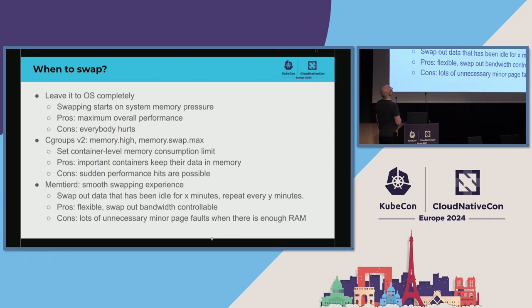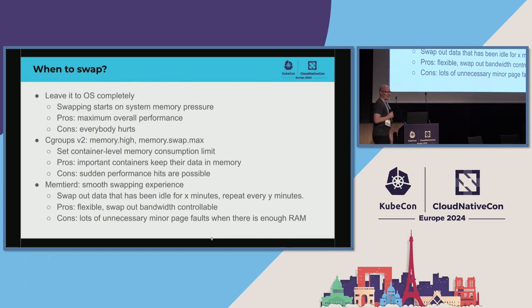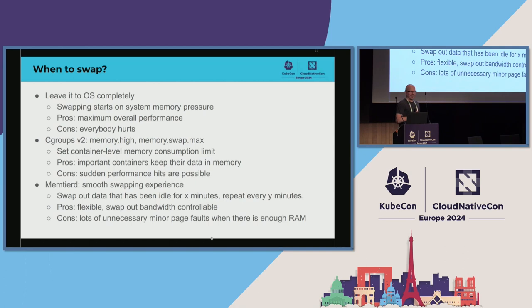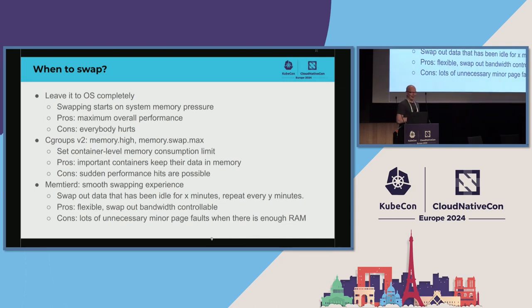When to swap: you can leave swapping completely to the operating system, which starts swapping under memory pressure. The overall performance is good when memory is available, but when there is memory pressure everyone suffers — probably one reason Kubernetes has it disabled. In cgroup v2 there are controls for per-container memory pressure: the memory.high control causes the OS to start swapping only that container, which gives better isolation of the impact on other workloads.